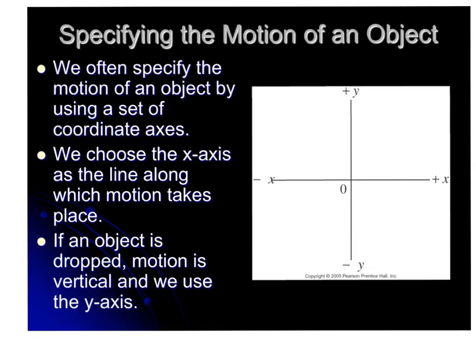Just like in past units, we often specify the motion of an object by using a set of coordinate axes. We choose the x-axis as the line along which motion takes place. And if an object is dropped, motion is vertical, and so we use the y-axis.